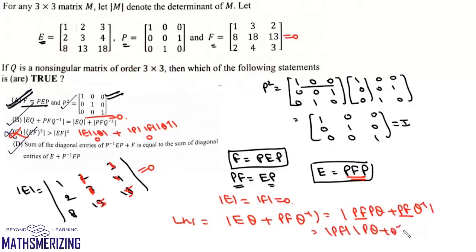The determinant of F is again zero, so that means option B is also correct.